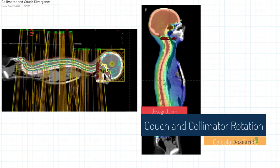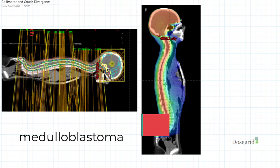Hey guys, today we'll be learning how to calculate collimator and couch angles to eliminate divergence in craniospinal irradiation.